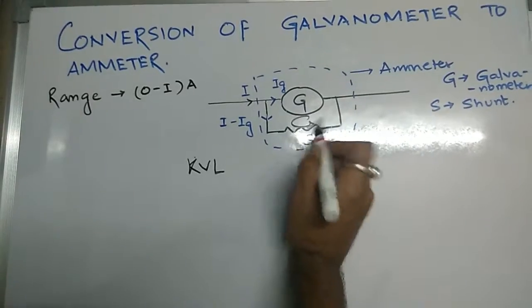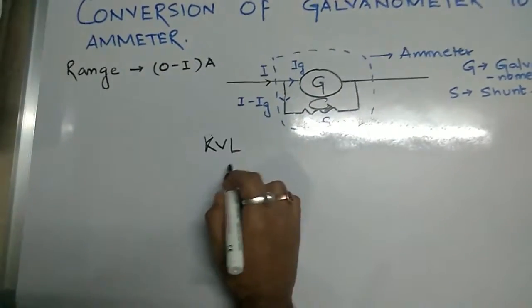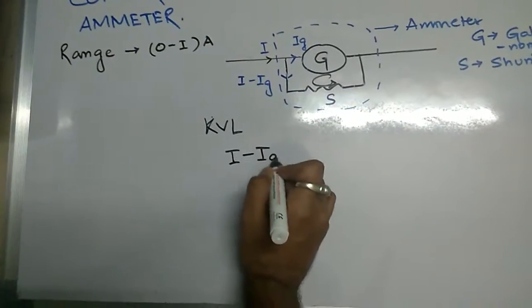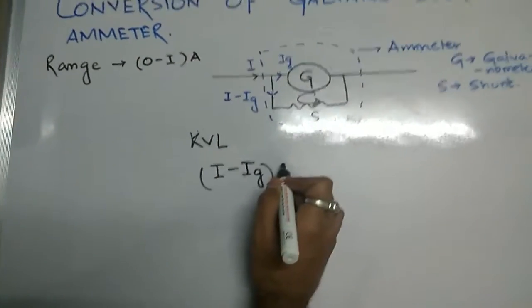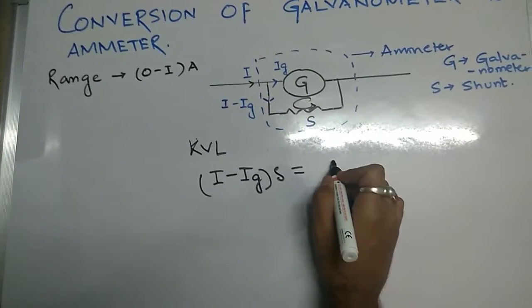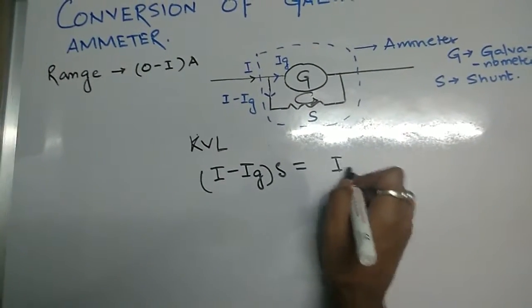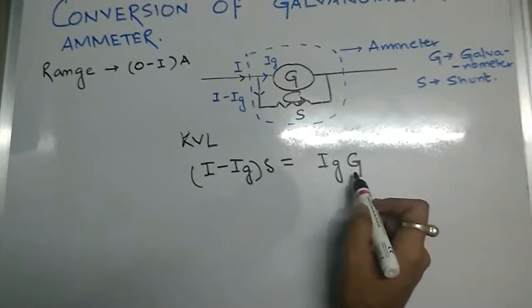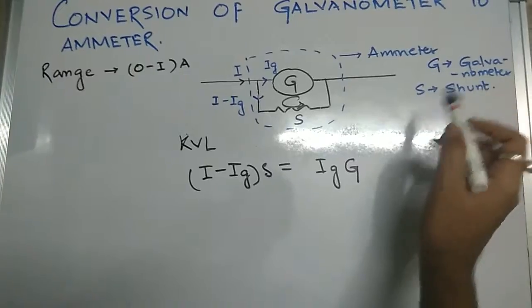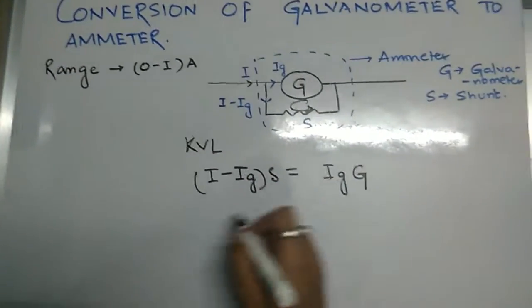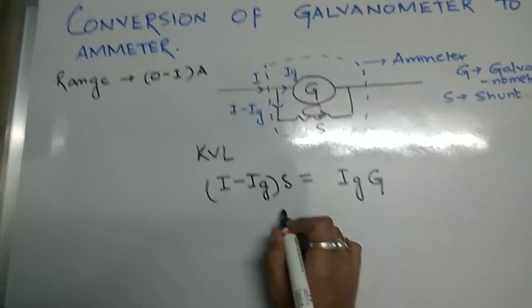What do we get here? I minus Ig into S is equal to Ig into G. G is the galvanometer resistance and S is the shunt resistance.